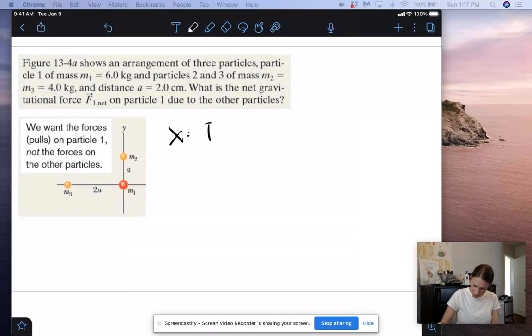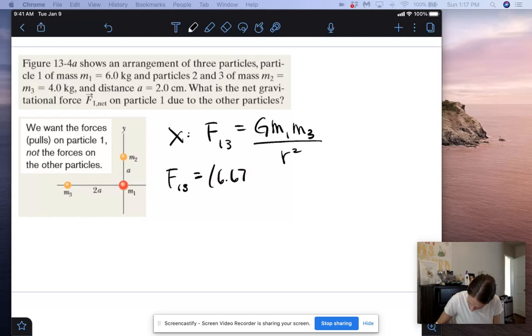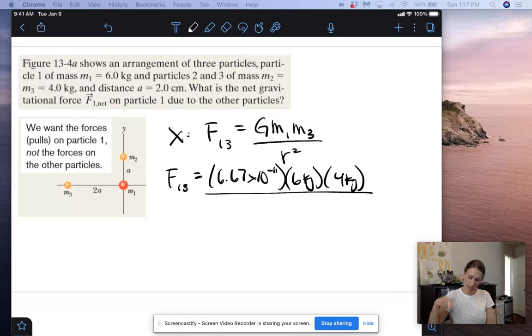So we have the force on particle 1 from particle 3. That will be g times mass 1 times mass 3 divided by the distance between them squared. So here we have big G, which is 6.67 times 10 to the negative 11th, times mass 1, which is 6 kilograms, times mass 3, which is 4 kilograms.